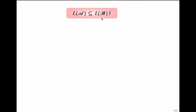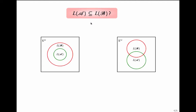Suppose we have two Büchi automata A and B — how do we check if the language of one is contained in the language of the other? Suppose this outer region represents the set of all infinite words. The green circle represents L(A) and the red circle represents L(B). In this picture, L(A) is contained in L(B). Now look at the portion outside this red circle — this is the set of words not in L(B), which is L(B) complement.